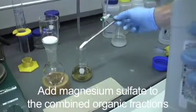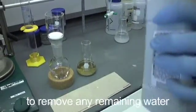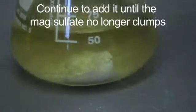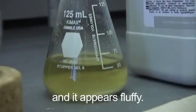Add magnesium sulfate to the combined organic fractions to remove any remaining water. Continue to add it until the mag sulfate no longer clumps and it appears fluffy.